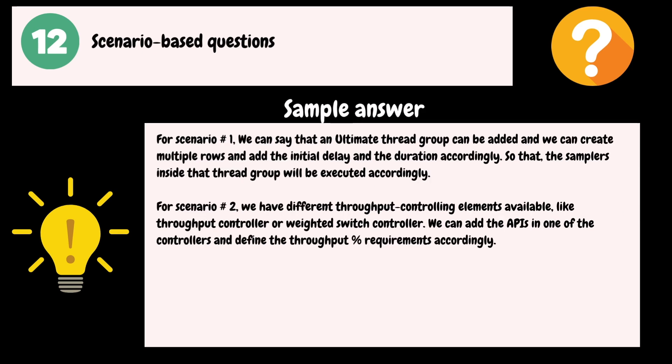Here are the sample answers for both scenarios. For Scenario 1: an Ultimate Thread Group can be added, and we can create multiple rows and add the initial delay and duration accordingly so that the samplers inside the thread group will be executed at the right times. For Scenario 2: we have different throughput controlling elements available, like the Throughput Controller or Weighted Switch Controller. We can add the APIs in one of those controllers and define the throughput percentage requirements accordingly.